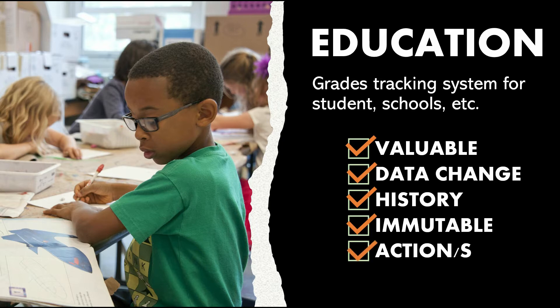What kind of actions can a smart contract take at the end of the school year or based on certain grade changes? Well, we could do a lot. For example, at the end of the year, an action may be to close out the grade card and email the final GPA or grades to the parents.